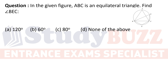In the given figure, ABC is an equilateral triangle. Find angle BEC. ABC is equilateral so angle BAC = 60 degrees. The quadrilateral ABEC is a cyclic quadrilateral because all points touch the circle.